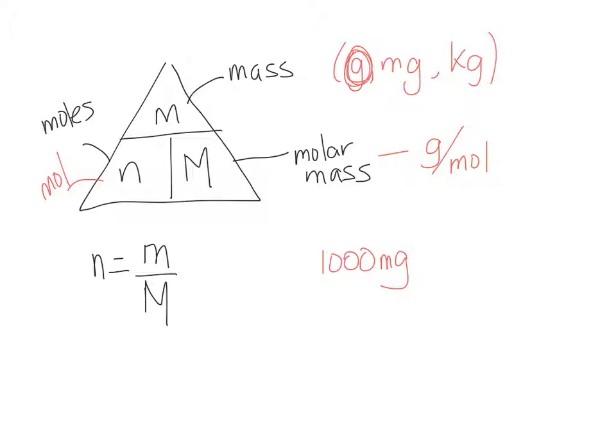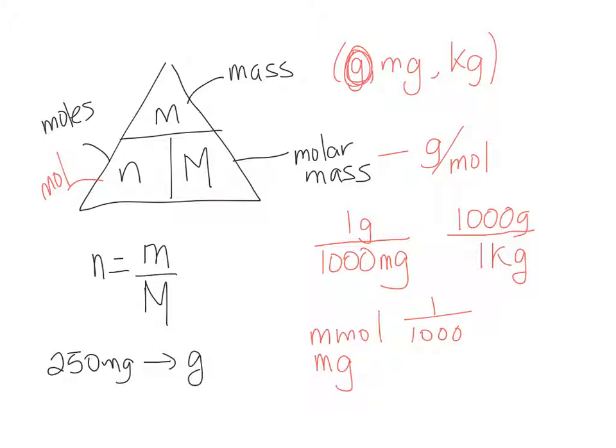Because there's 1,000 milligrams in 1 gram, converting to milligrams you would divide by 1,000, and there's 1,000 grams in 1 kilogram. Any time you see M before something, it means milli - so millimoles, milligrams. How many grams in 250 milligrams? 0.25. You divide by 1,000, so 0.25 grams.